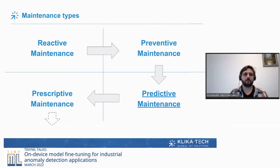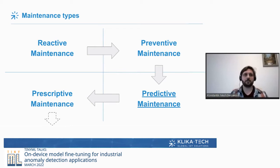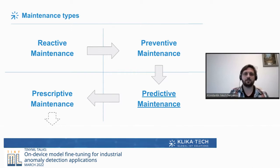The most basic maintenance type is reactive maintenance — you wait until the equipment actually breaks, then go and replace the part. It works well for something like a light bulb in your room, where there's no real damage from being without light for some time. But in industrial settings, it can lead to large losses and even equipment damage.